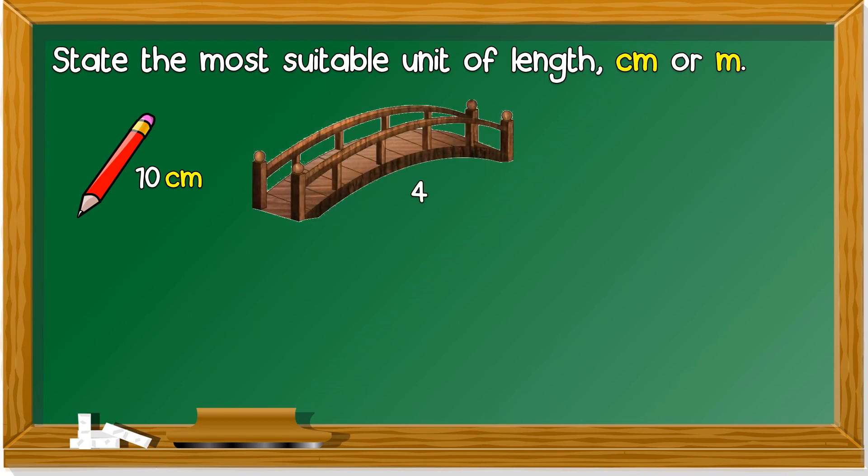Next one. A bridge. 4. So, is it 4 CM or 4 M? A bridge. The suitable one would be M. If it's 4 CM, it's very short. Can a bridge be shorter than your ruler? It's impossible, right? So, you use M.